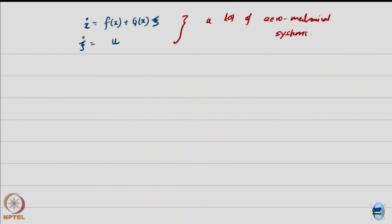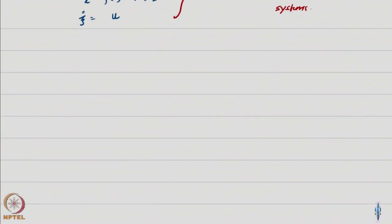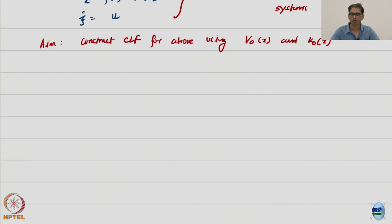A student asks a question. All I said was, I do not have the control here anymore, but I have the control in the next stage. There's a state instead of the control, and the derivative of the state is this. This is actually how backstepping works by working over layers of integrators. The motivation is aeromechanical systems. The aim is to construct CLF for above using v0(x) and k0(x).